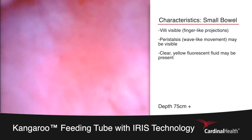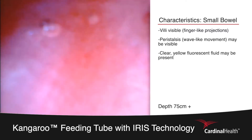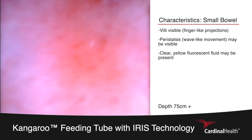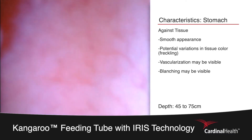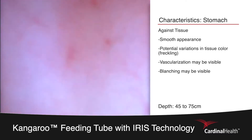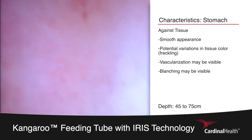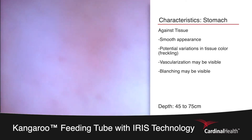In this procedure, the placer retracts the tube from the small bowel into the stomach, as can be seen by the tissue change. As the placer progresses the tube back towards the small bowel, you will again visualize the pylorus.